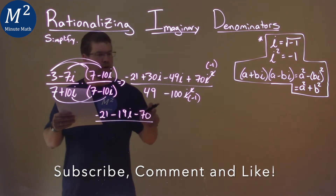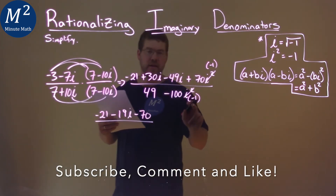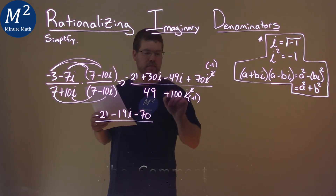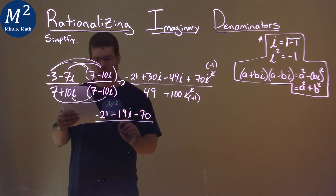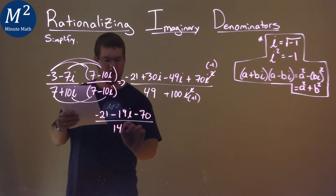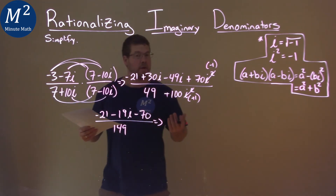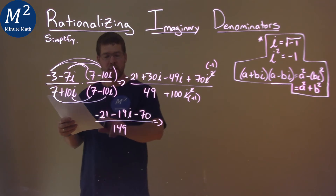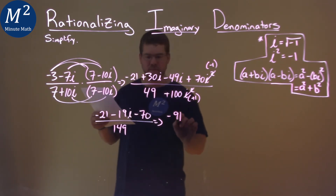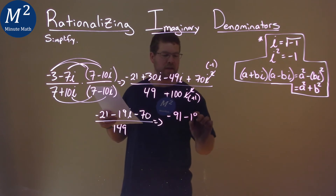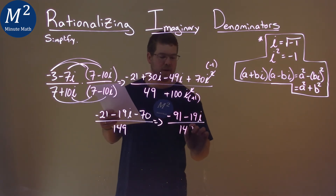Same thing down here: 49 minus 100 times negative 1 — since we're adding the two — 49 plus 100 is 149. Let's keep combining our like terms. The numerator: negative 21 minus 70 is negative 91. We still have a minus 19i here. And we're divided by 149.